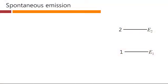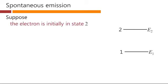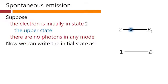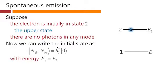So we're going to start again thinking about our electron system that has got two possible states, state one with energy E1, state two with energy E2. And we suppose that the electron is initially now in state two. So that's going to be our starting state of the system. And this is the upper state. And there are no photons in any mode. At least that's what we're going to presume here for the moment. So now we can write that initial state as just the creation operator for an electron in state two, operating on our empty state as usual. So this corresponds to just an electron in state two and no photons in any modes. And this has a total energy that is just E2.